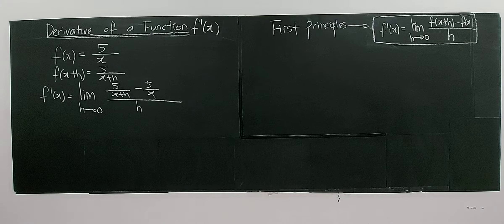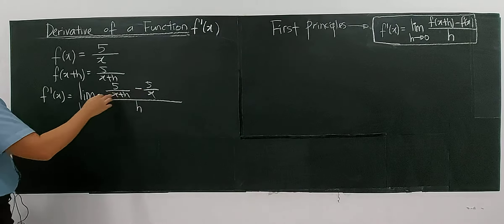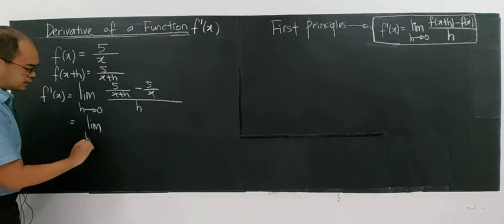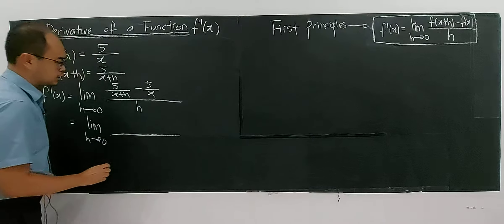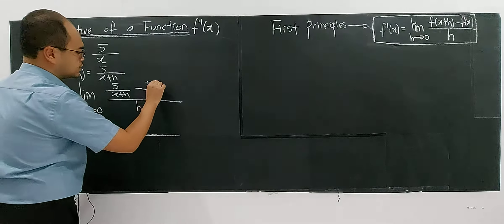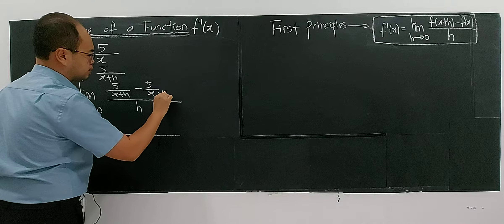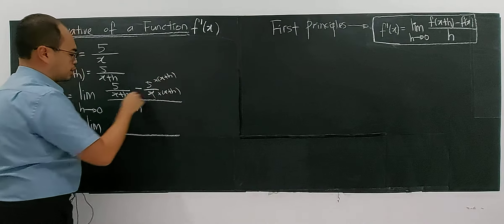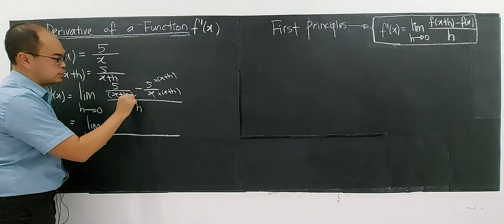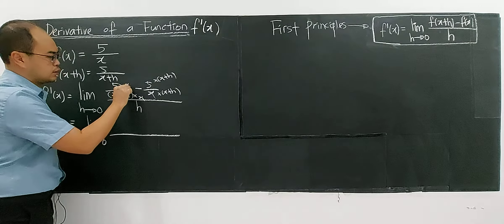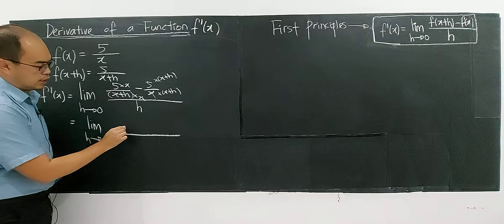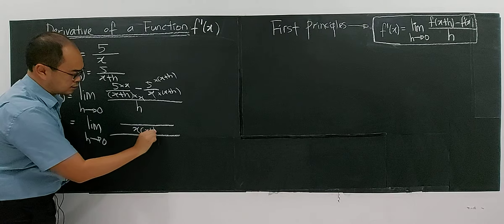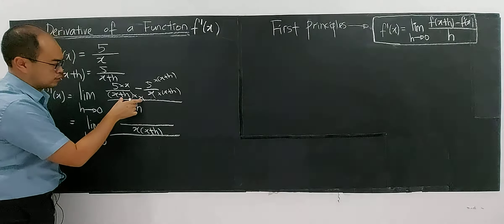Now, how to deal with this problem — usually when we see a fraction, we try to equalize the denominator. So for this case, I multiply the first term by (x+h) and the second term also by (x+h), while for the other term I multiply by x. This gives the common denominator x(x+h).